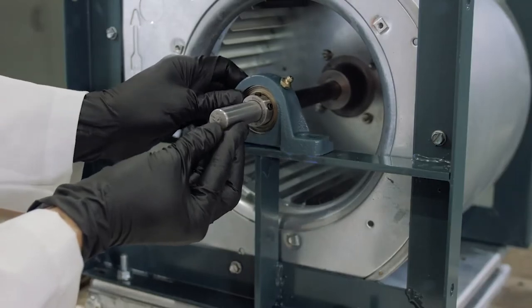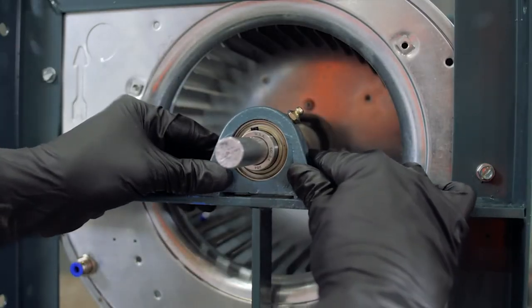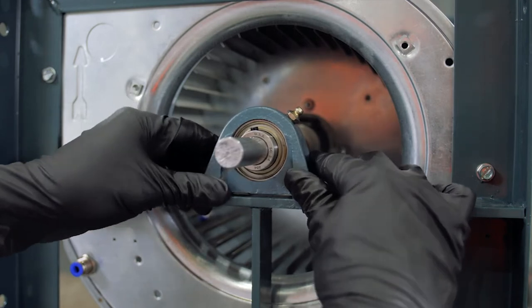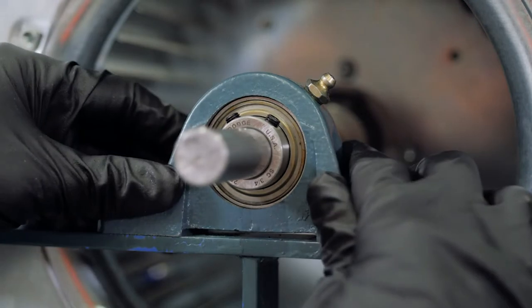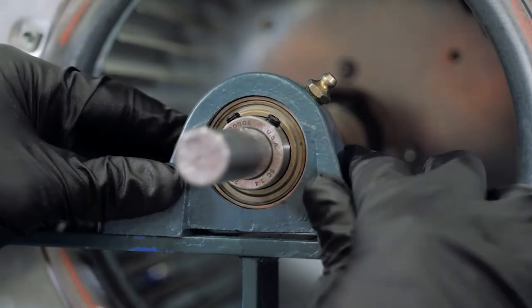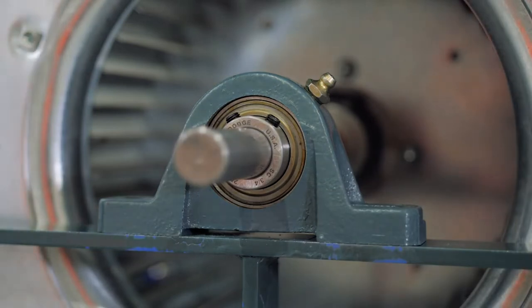Proper alignment is important to maximize the life of the bearing. Dodge ball bearings are rated for plus or minus two degrees of static misalignment. A bearing may be aligned using the shaft to position the insert relative to the housing or by fixing the insert with the shaft and adjusting the housing.